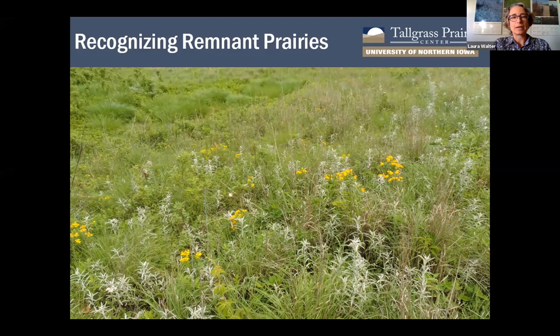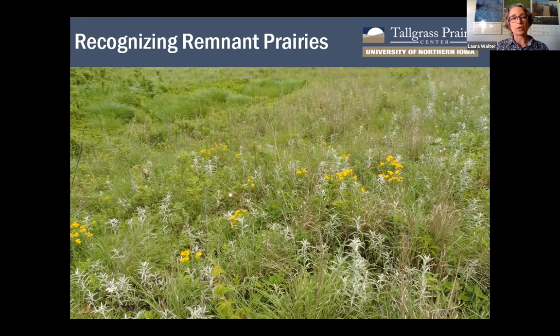Justin gave an amazing introduction to what a remnant prairie is and how you can find one to explore. I'll be talking about some of the things you might expect to see when you go to a remnant prairie — which might also help if you suspect you have a remnant that hasn't yet been identified in your area. Places where that might happen include areas used for pasture, wet spots in a field not suitable for tillage, or lowlands near rivers where forests have begun to encroach but where there might have been a savanna in the past. There could be little vestiges of prairies hiding right under your nose.